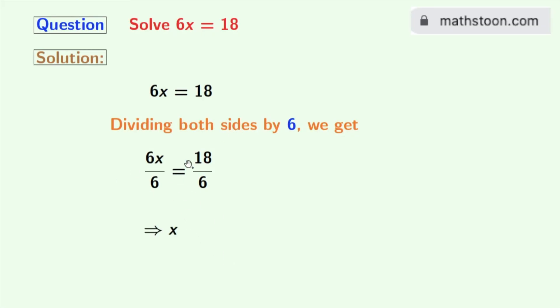And we will write 18 as 6 times 3. And we have 6 in the denominator. Again see that 6 gets cancelled. So, we are left with 3.